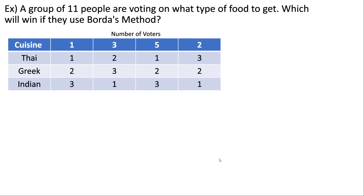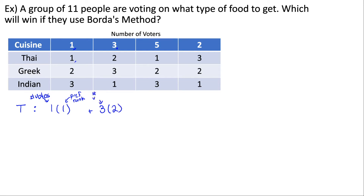We'll take a look at an example where a group of 11 people are voting on what type of food to get — which will win if they use Borda's method? The general idea is to take our number of voters and multiply it by their preference ranking. So we'll start with our first candidate, Tie. We have one voter times a preference ranking of one — that's number of voters times preference ranking. Now we add the next group: three voters that rank them second, so multiply by three voters ranking them second. The two here is our preference ranking.